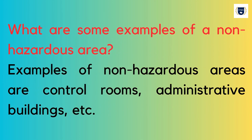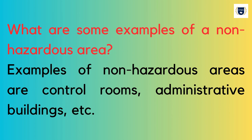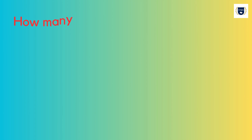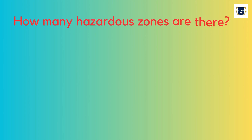What are some examples of a non-hazardous area? Examples of non-hazardous areas are control rooms, administrative buildings, etc. How many hazardous zones are there?